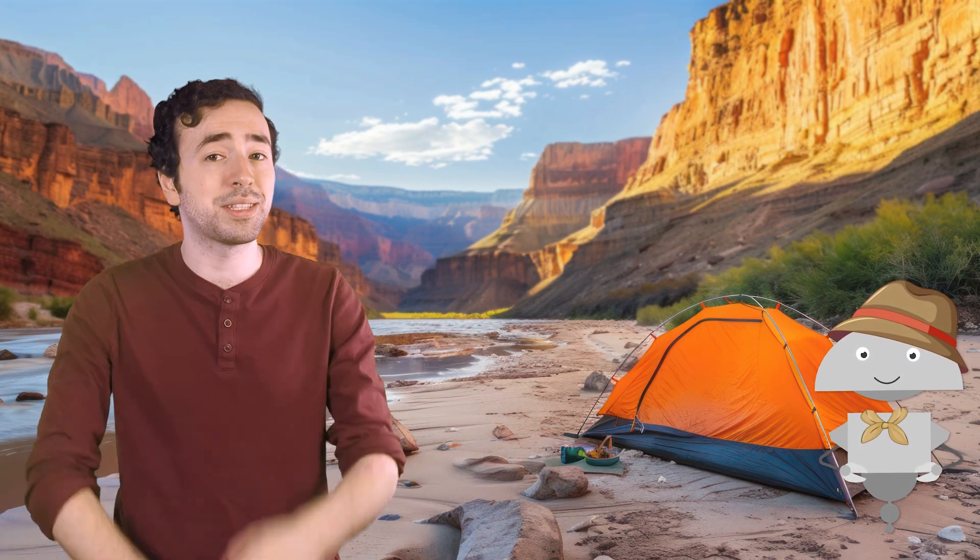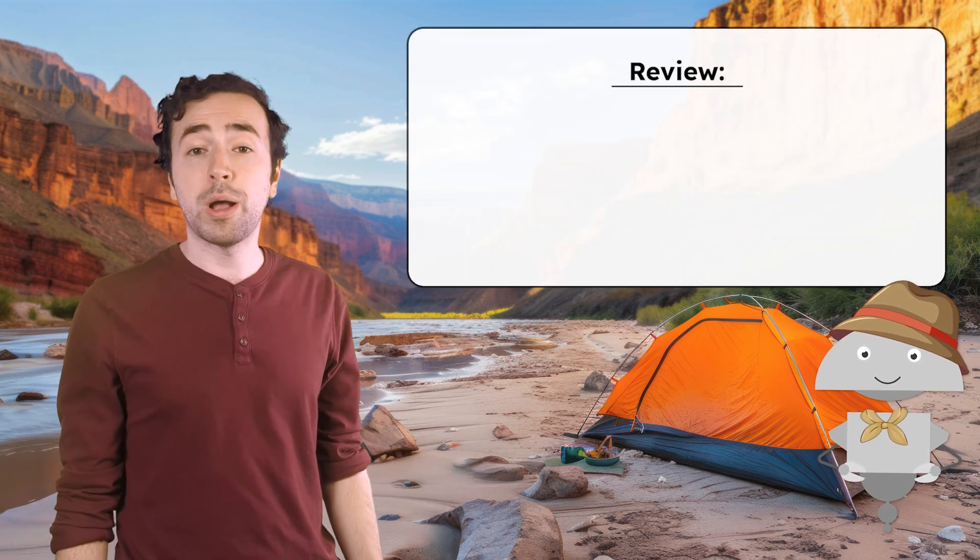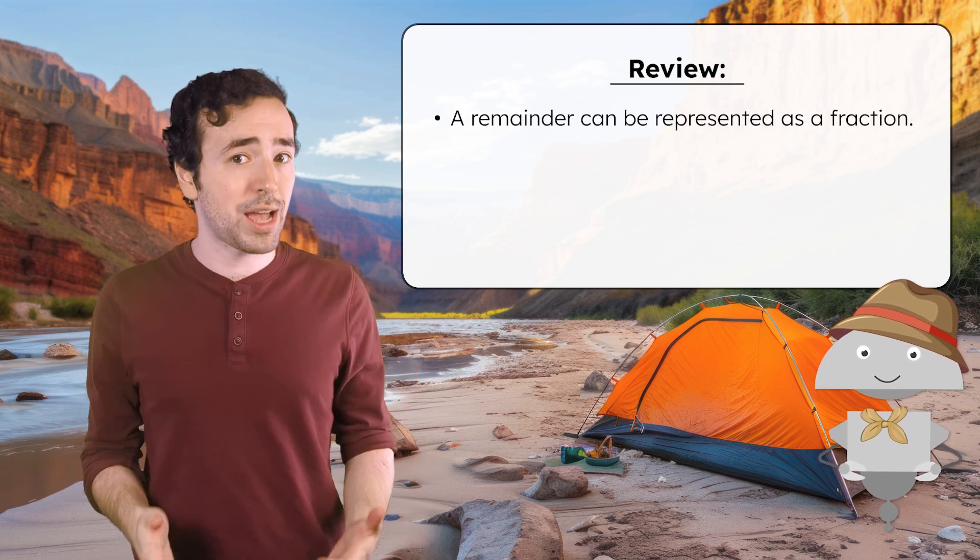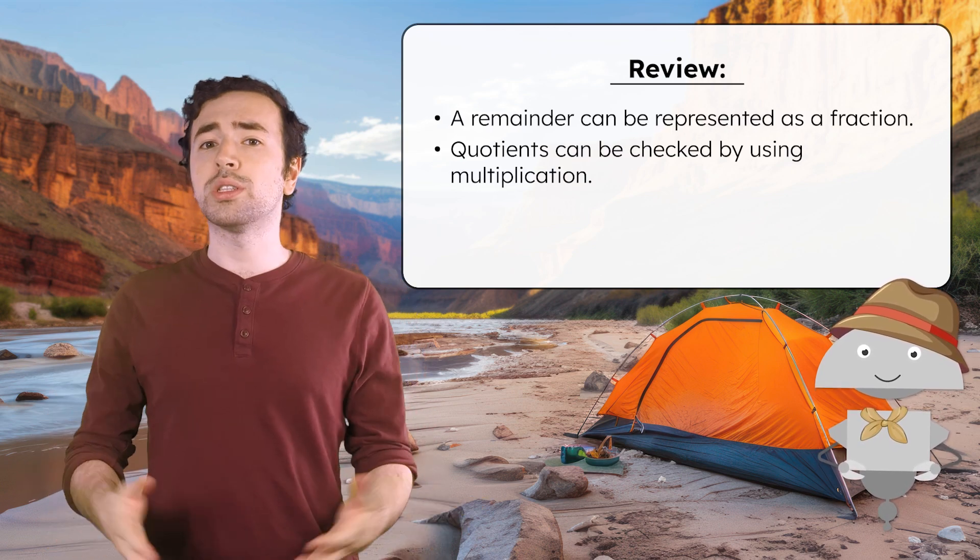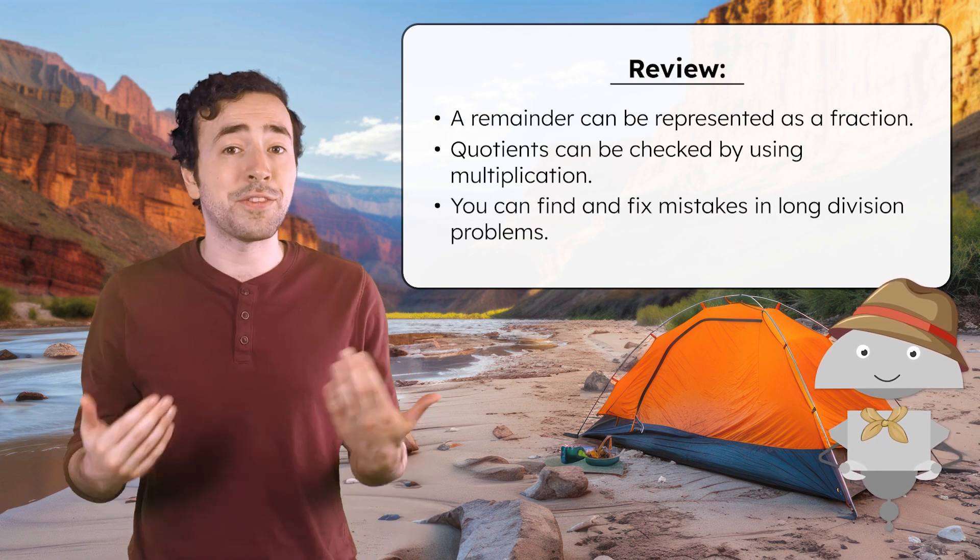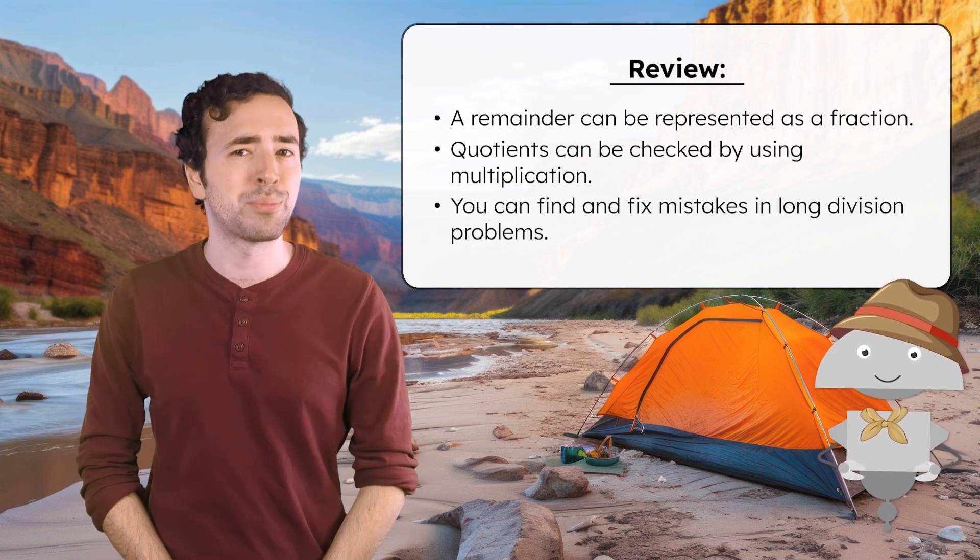Whew! We made it to the bottom of the Grand Canyon and it's time to set up camp by the riverbank. I think Mia and I have earned some rest after that trek. So, what have we learned today besides the fact that long hikes are better with friends? Well, now you know that a remainder can be represented as a fraction. You also know that quotients can be checked by using multiplication. And you know how to find and fix mistakes in long division problems.